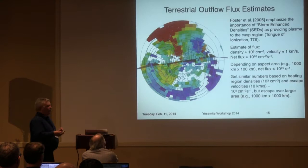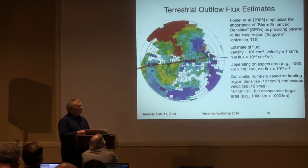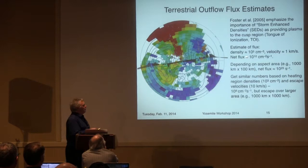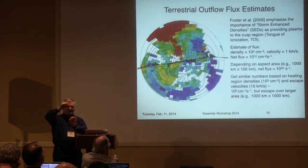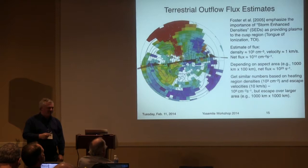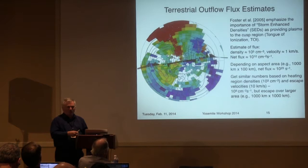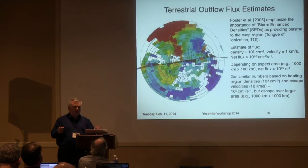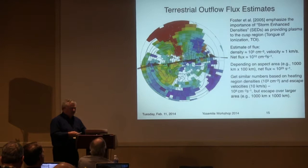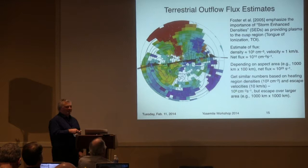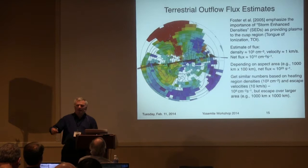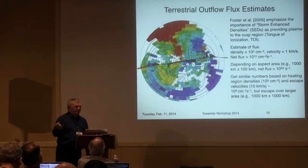This goes to John Foster's point: if you have something like a tongue of ionization bringing plasma horizontally into a region where outflows occur, the rate at which ions go out is governed by the rate at which they come in. Assume a density of 10⁵ per cm³ and velocity of 1 km/s — net flux is 10¹⁰ per cm²/s. With an aspect ratio of 1000 km wide by 100 km high, you get 10²⁵ per second. That number keeps reappearing, and there's something telling us how this process works.